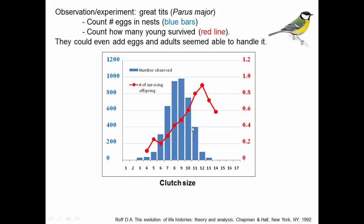They determined how many young survived — shown as the red line. The peak number of surviving individuals actually comes from nests where twelve eggs are laid. Which is strange, because birds are laying eight or nine, apparently fewer than they could be laying to experience maximum fitness. They did follow-up experiments where they added eggs to nests with eight or nine, bringing them up to twelve. The adults seemed fine — there didn't appear to be an increase in adult mortality — and they were able to generate more individuals.